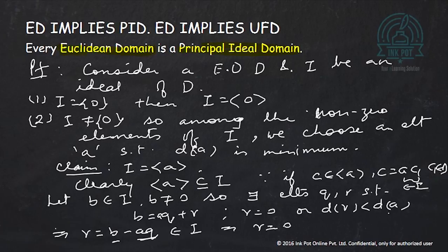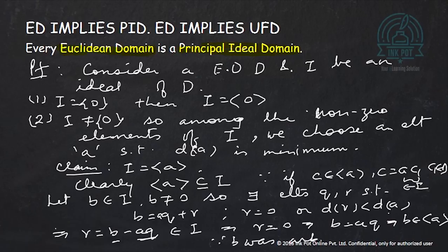This implies b equals aq, so b belongs to the ideal generated by a. Since b was an arbitrary element, I is contained in ⟨a⟩. Both containments hold, so I equals ⟨a⟩, and hence every Euclidean domain is a principal ideal domain.